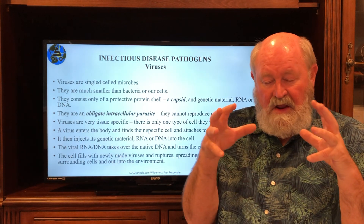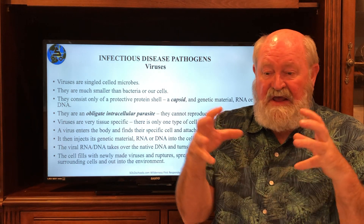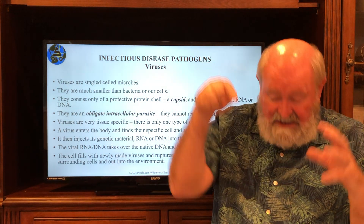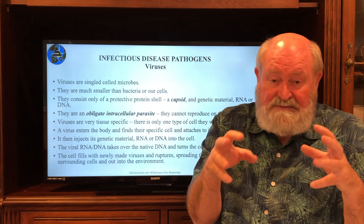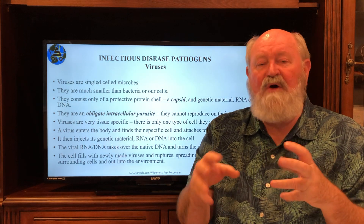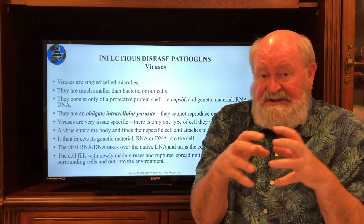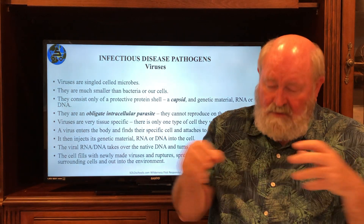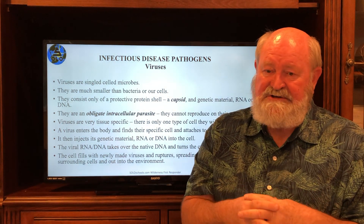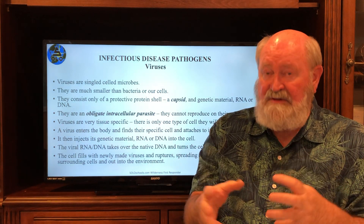When a virus gets into the body, it finds its specific cell — for example, respiratory epithelial cells. It lands on and attaches itself to the cell, then has a mechanism for injecting its RNA into that cell. Once inside, it goes to the cell's RNA or DNA and turns the cell into a virus factory. The cell, instead of doing what it's supposed to do, now replicates the viral genetic material, makes capsids, and combines the two. The cell slowly fills up until it literally ruptures, releasing the virus to infect more surrounding tissue. The immune system can't find the virus while it's inside the cell — it's only when it ruptures and is released that the immune system can find and attack it.